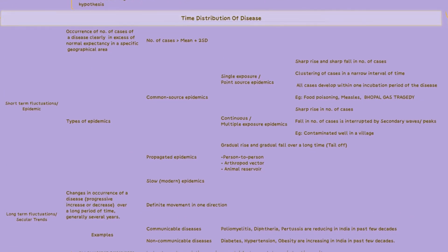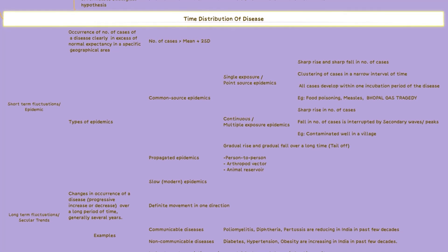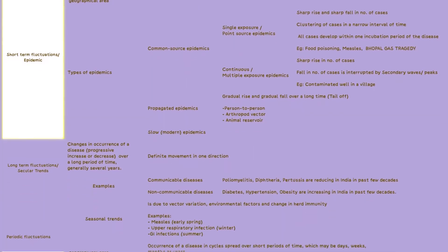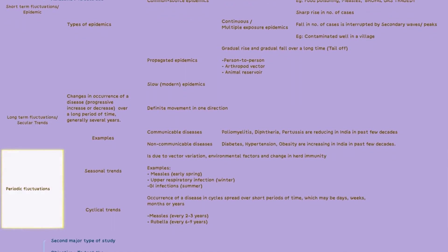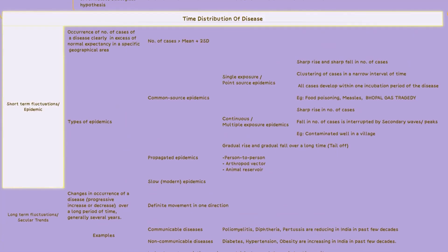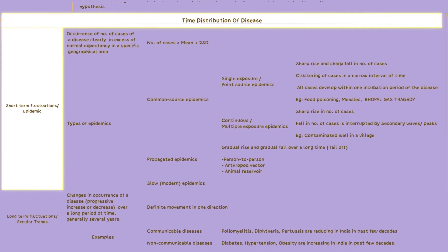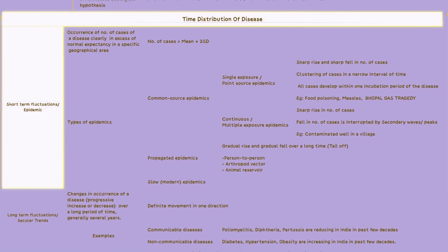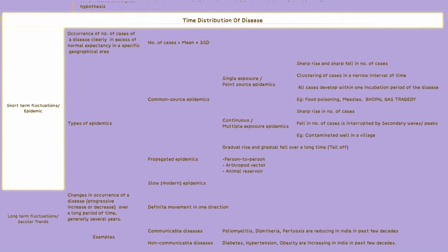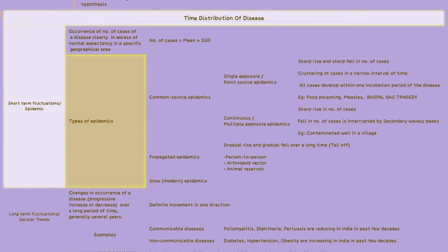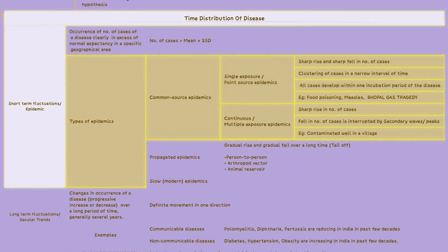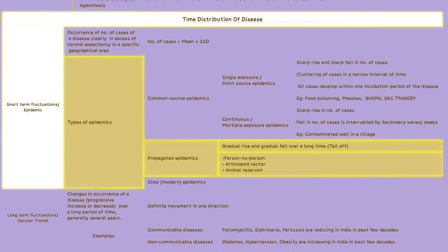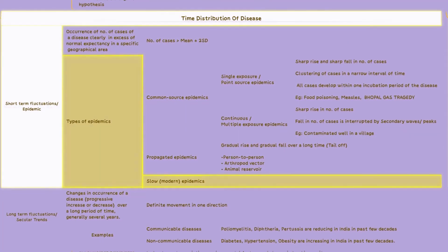The time distribution of diseases can be denoted by short-term, long-term, or periodic fluctuations. Short-term fluctuations in disease occurrence can manifest as epidemics, which often exhibit distinct patterns and can be categorised into different types: common source epidemics, propagated epidemics, or modern epidemics.